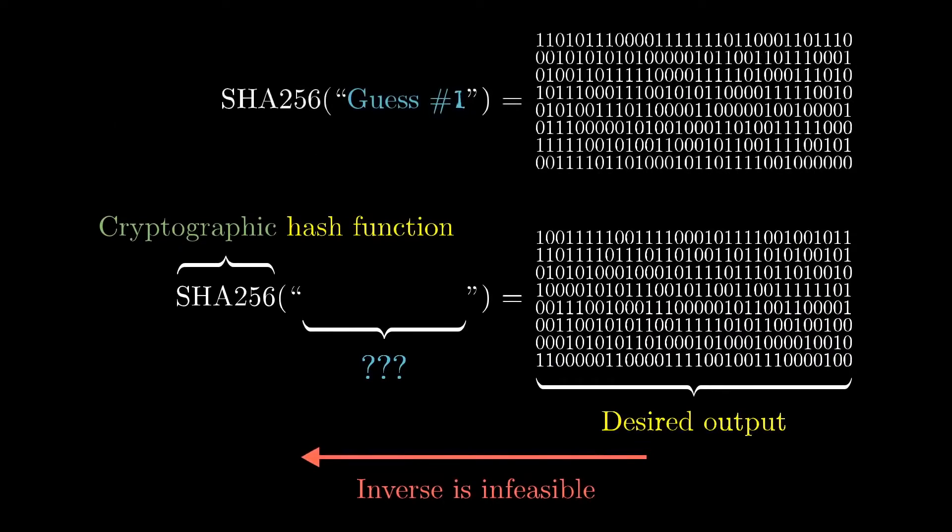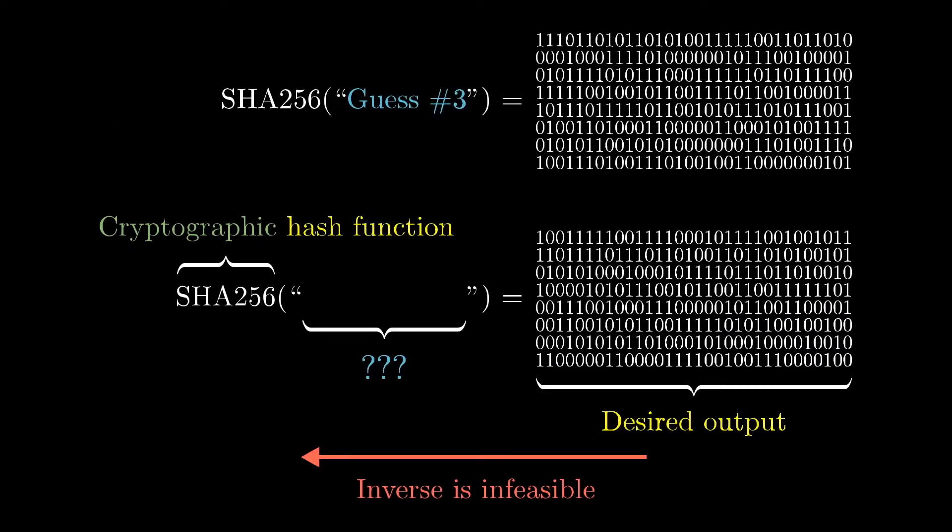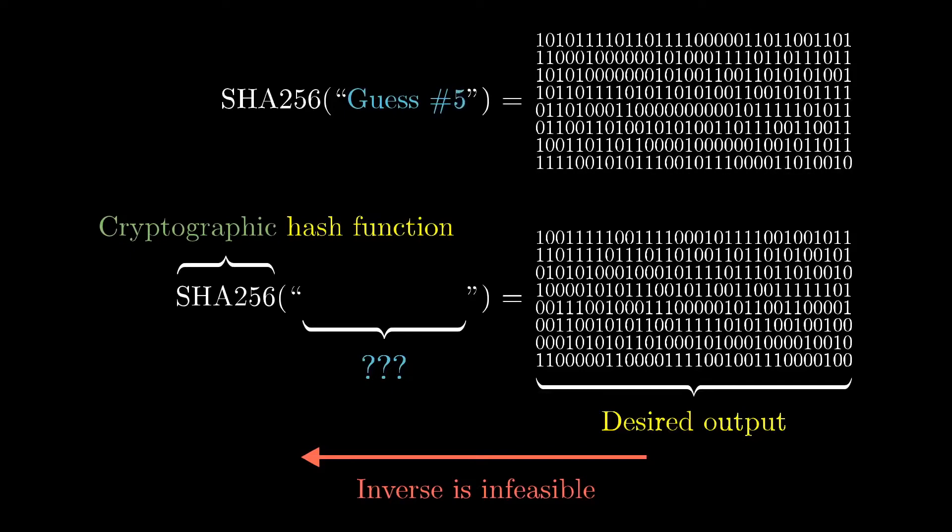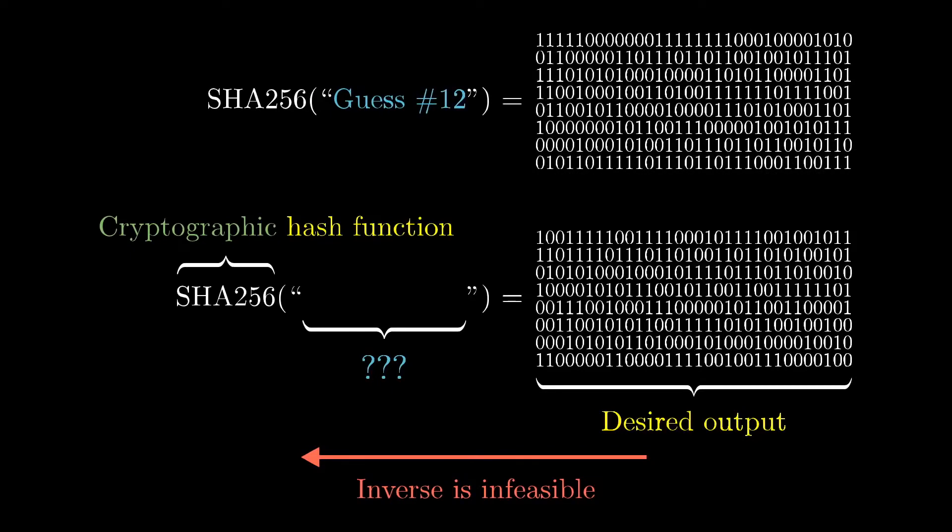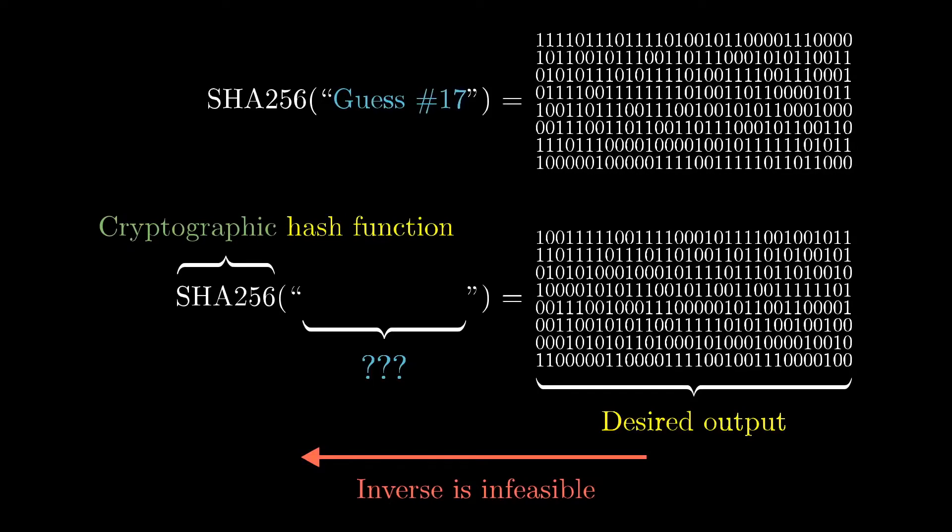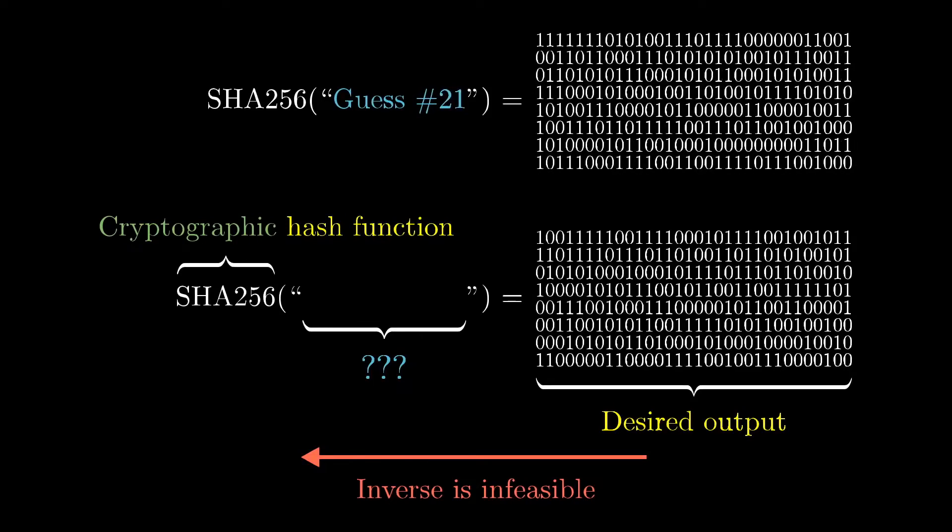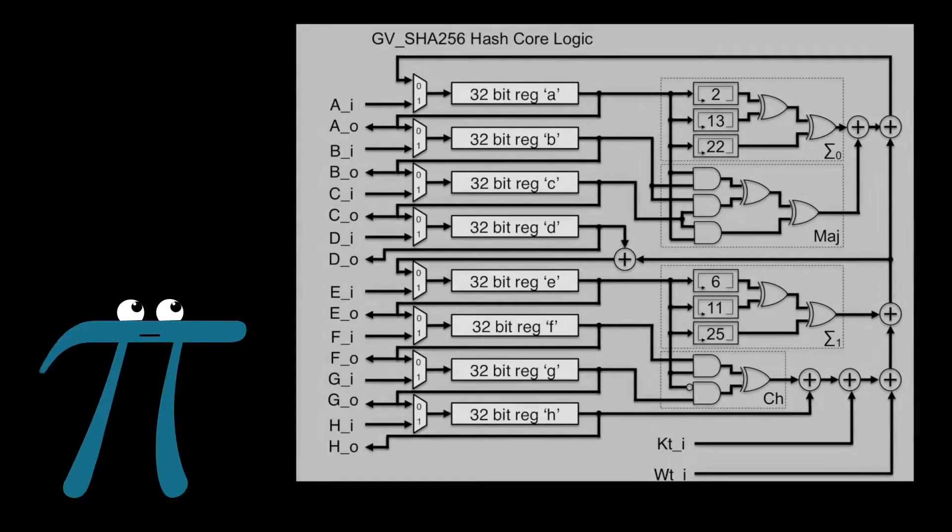And again, if you want to feel for how much computation would be needed to go through 2 to the 256 guesses, just take a look at the supplement video. I actually had way too much fun writing that thing. You might think that if you just really dig into the details of how exactly this function works, you could reverse engineer the appropriate input without having to guess and check, but no one has ever figured out a way to do that.